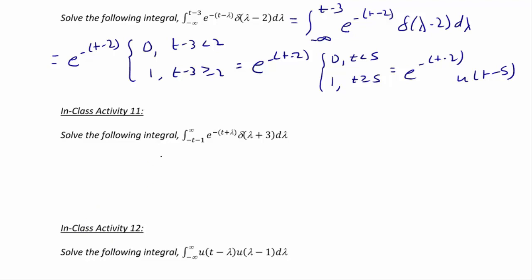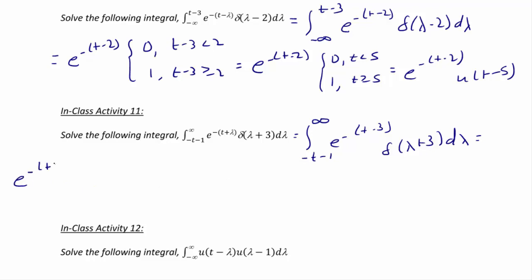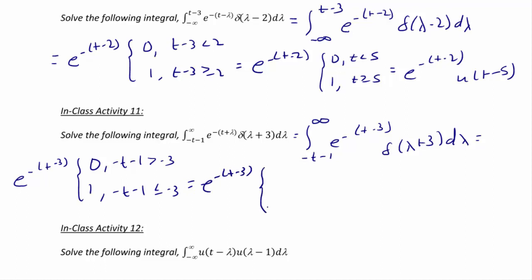In-class activity 11: solve the integral from (-t - 1) to ∞ of e^(-(t+λ))·δ(λ + 3) dλ. Using the sifting property, we pick off λ = -3, giving e^(-(t-3)) inside the integral. Factoring out e^(-(t-3)}, the integral is 0 for -t - 1 > -3 (t < 2) and 1 for -t - 1 ≤ -3 (t ≥ 2). The final answer is e^(-(t-3)}·u(t - 2).